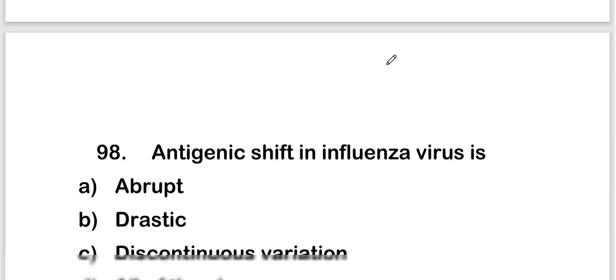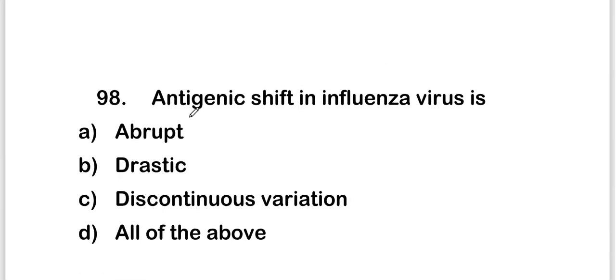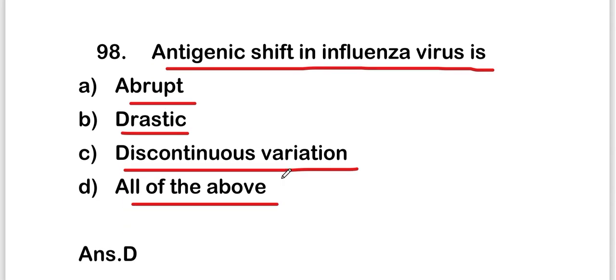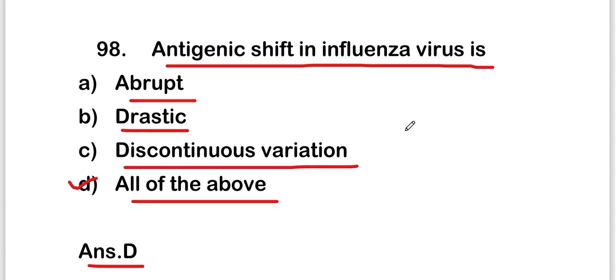The next question is: antigenic shift in influenza virus is abrupt, drastic, discontinuous variation, or all of the above? The right answer is option D — all of the above. Antigenic shift in influenza virus is abrupt, drastic, and discontinuous variation.